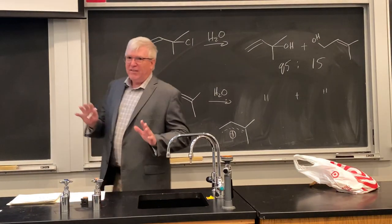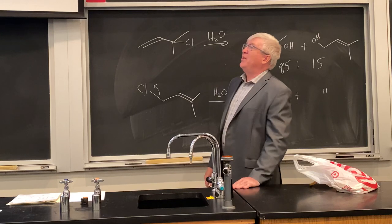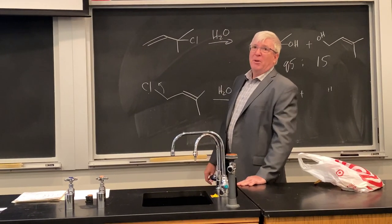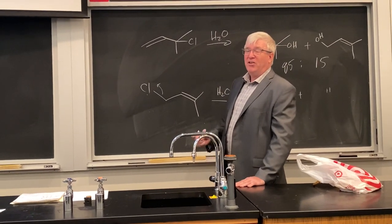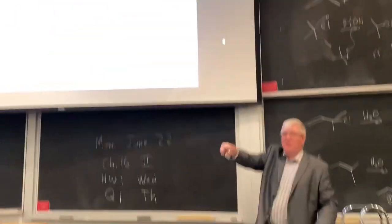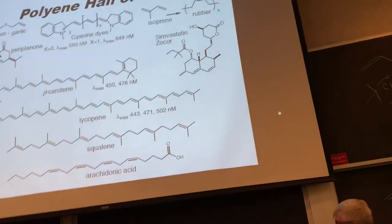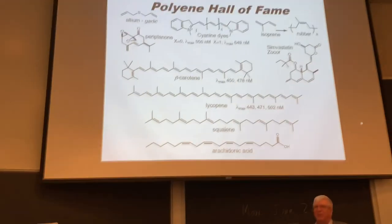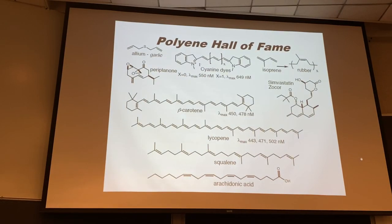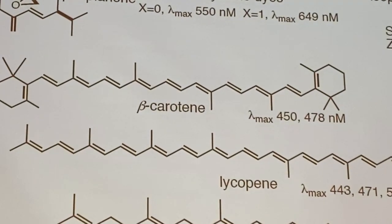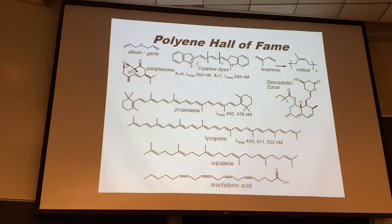Let's establish more fundamental ideas about molecular orbitals of the allylic cation, and then look at the molecular orbitals of butadiene with its two conjugated alkenes. First, here's a fun overview — the polyene hall of fame — showing some examples of very different types of compounds that are all polyenes with multiple alkenes.